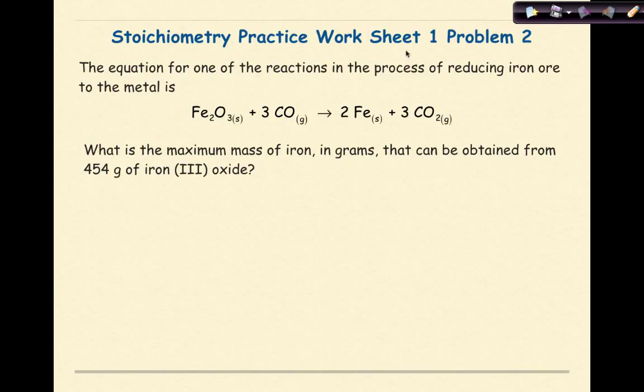Stoichiometry Practice Worksheet 1, Problem 2. The equation for one of the reactions in the process of reducing iron ore to metal is Fe₂O₃ plus 3CO yields 2Fe plus 3CO₂. What is the maximum mass of iron in grams that can be obtained from 454 grams of iron III oxide?